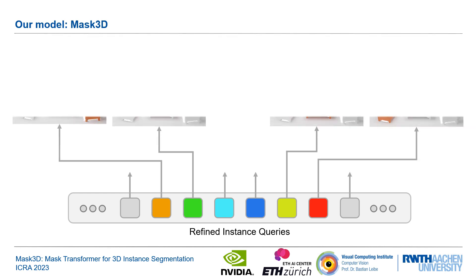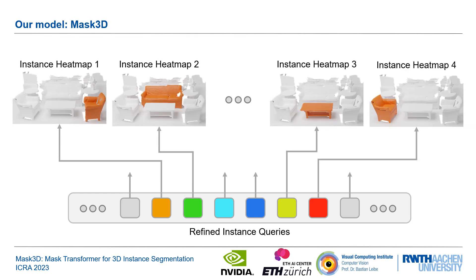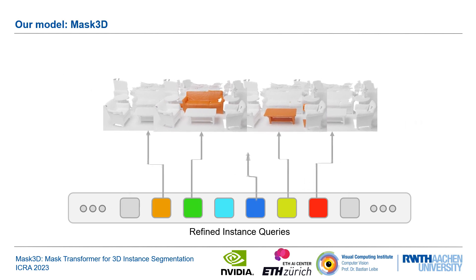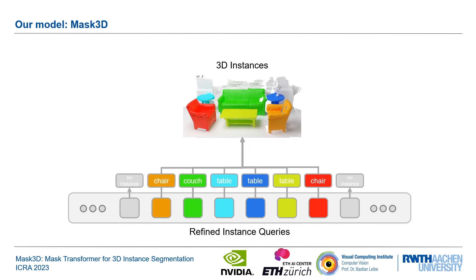This results in instance heatmaps over the entire point cloud. After normalization and thresholding, these heatmaps with the associated semantic class yield the final semantic instance mask for the 3D scene.